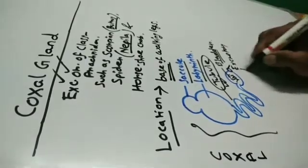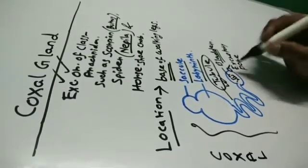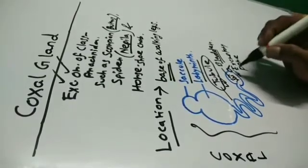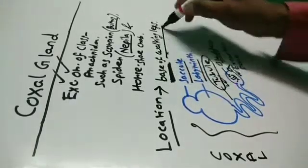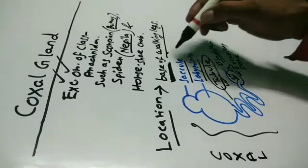This excretory pore is actually located at the coxa region of the walking legs, so this is called the coxal gland.